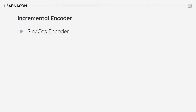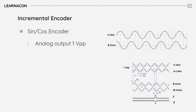Sine-cosine encoders, also known as sine encoders, are similar to standard incremental encoders in that they both provide position and direction information. However, the primary difference is the output waveform. Sine-cosine encoders provide position and direction information in the form of one-volt peak-to-peak analog sine waves, typically referred to as A and B, which have a 90-degree phase shift. In contrast, incremental encoders provide position and direction information as a pair of quadrature digital square waves.